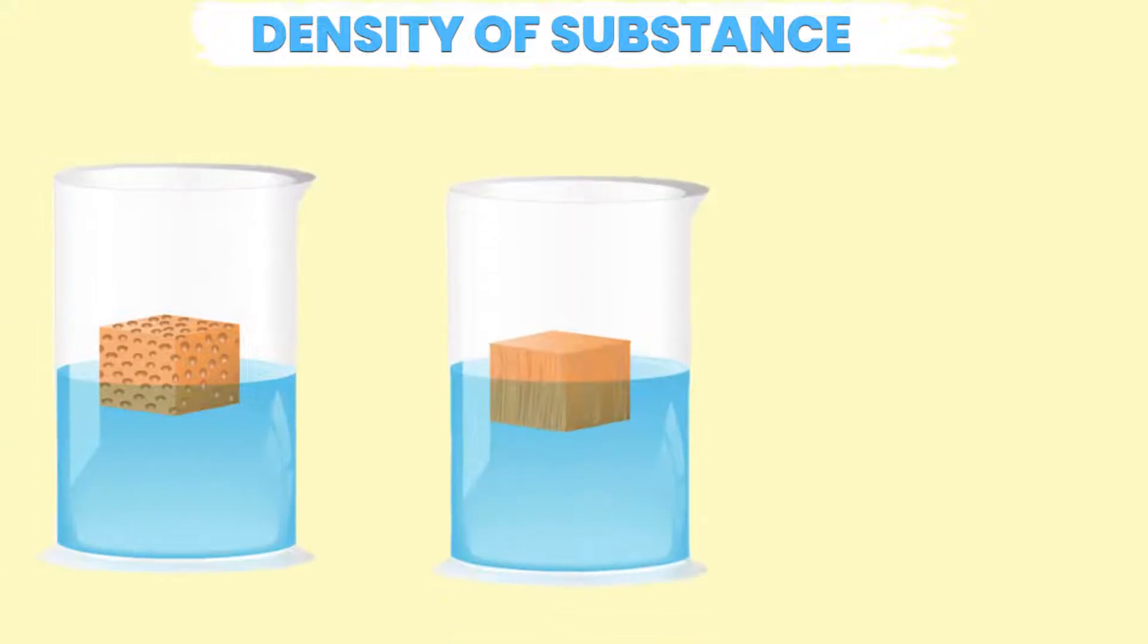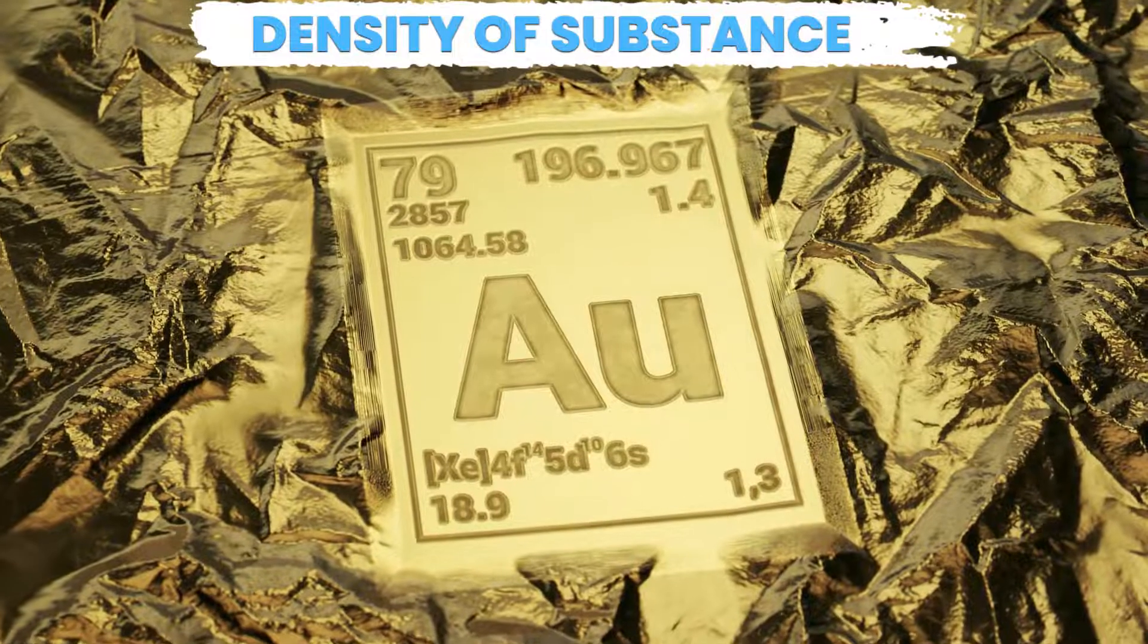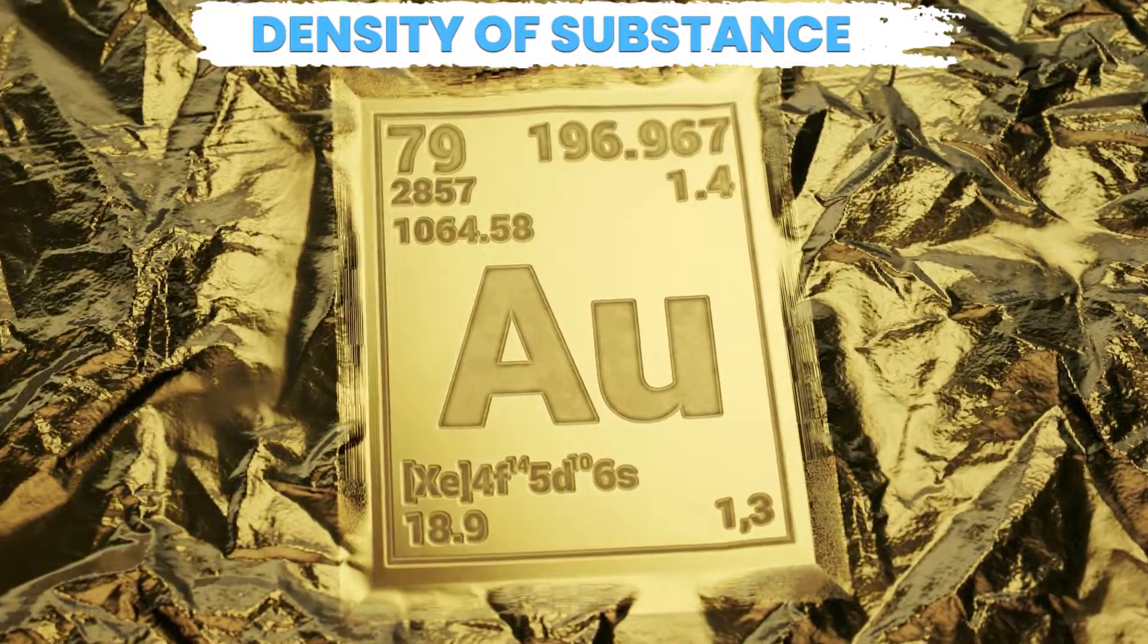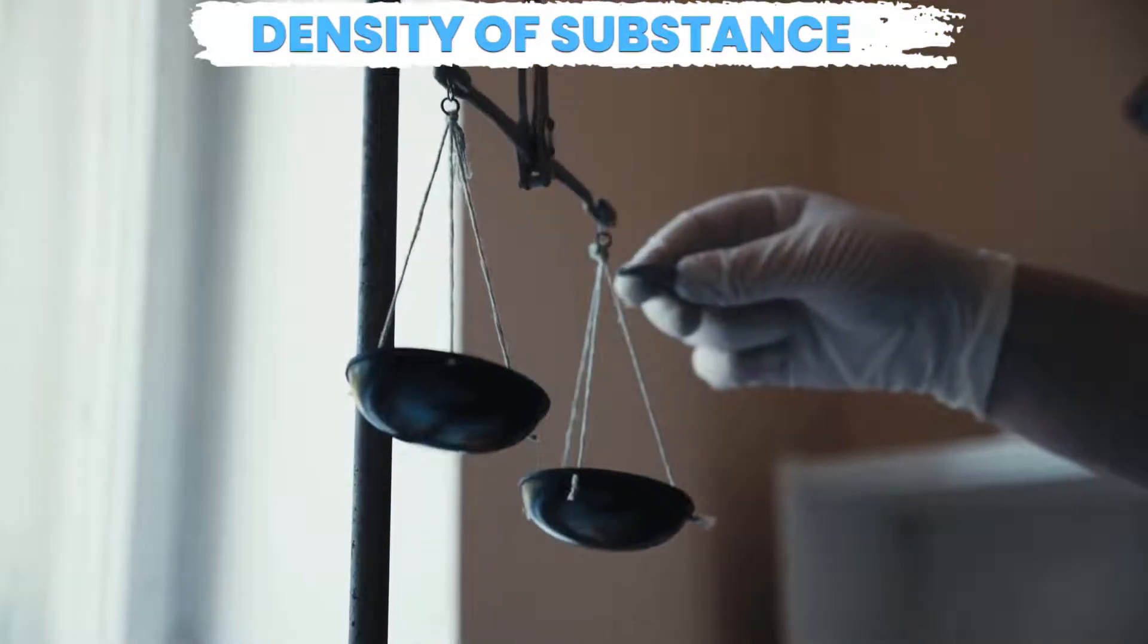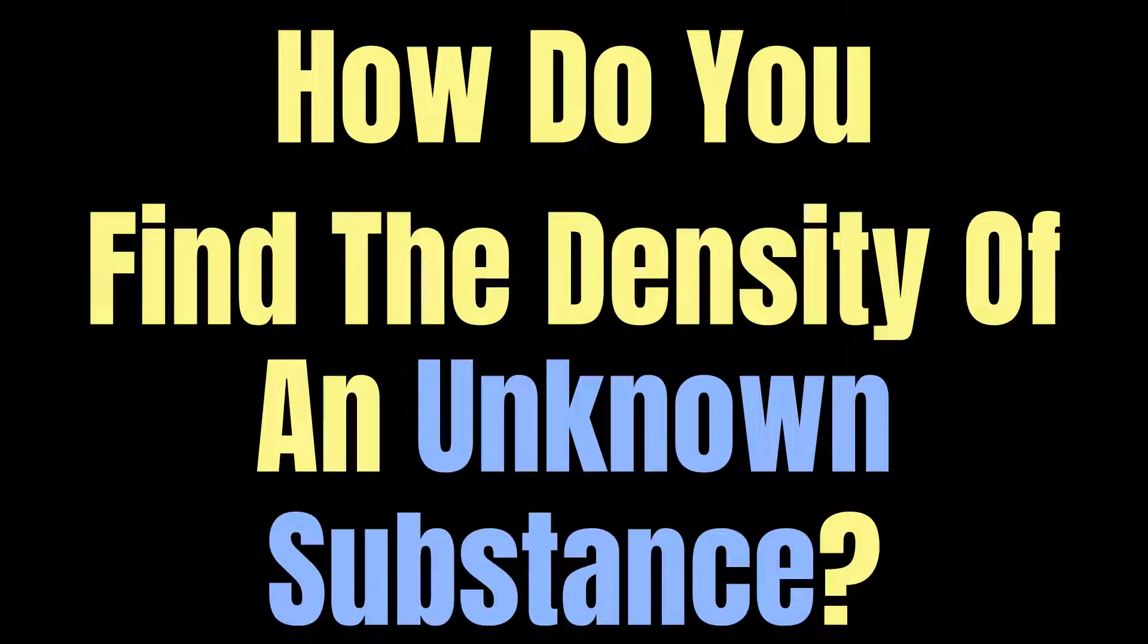Knowing the density of a substance can be useful in a variety of ways. It can help identifying an unknown substance, it can be useful in determining the purity of a substance and in calculating the mass of a sample. So how do you find the density of an unknown substance?